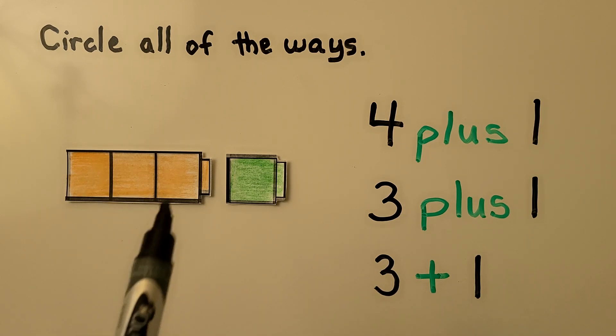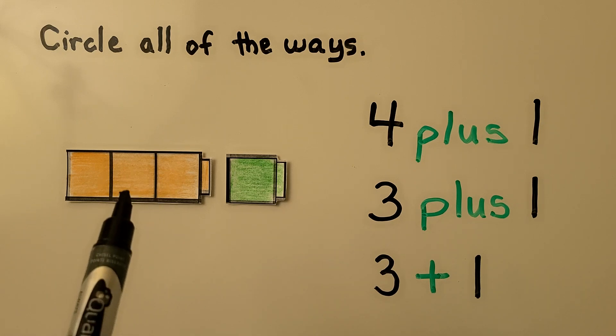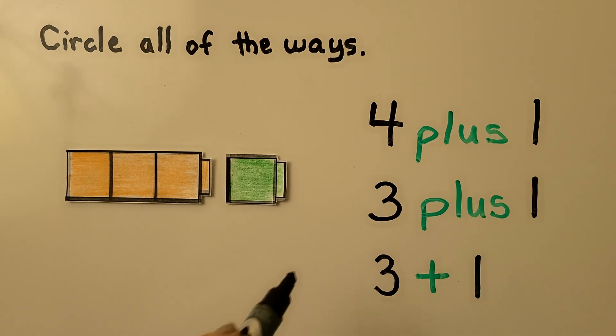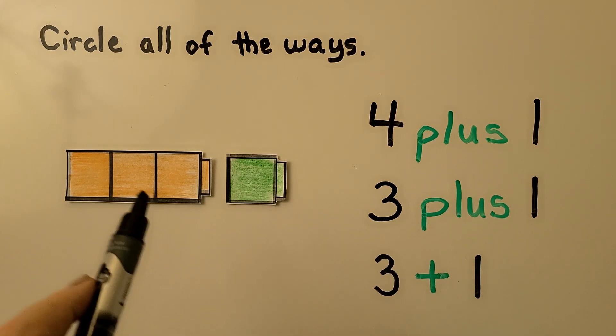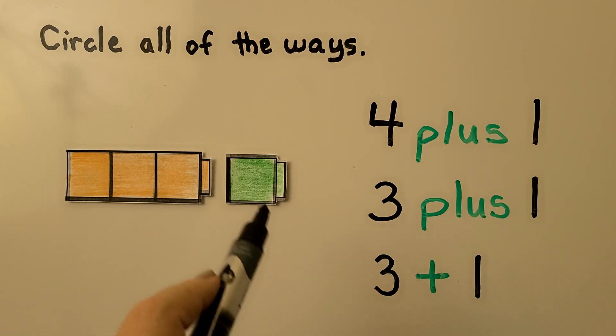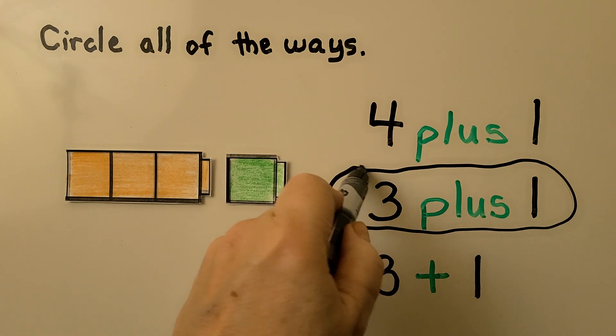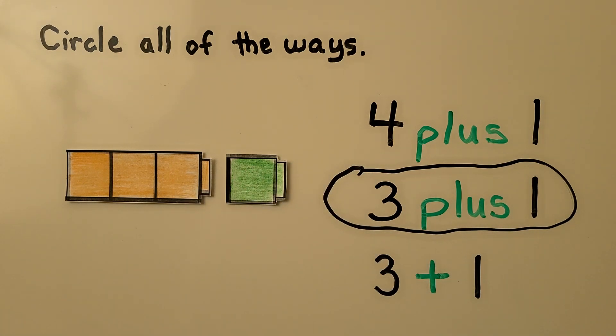So we know this one is a three. And the second number should match the green group. We have a one. Three plus one shows three orange plus one green. So that's one way to show how many in all. And three with a plus symbol and one, that's another way to show how many in all.